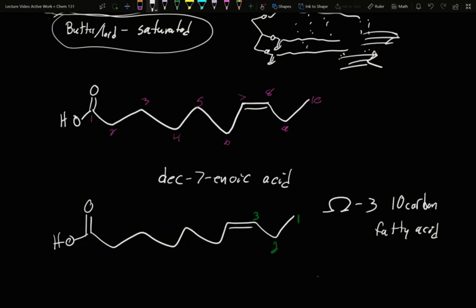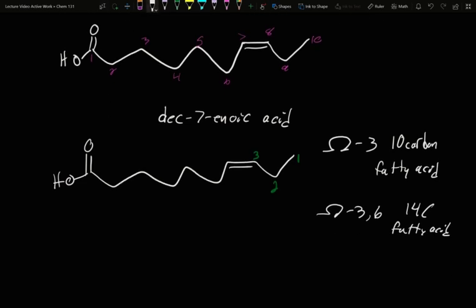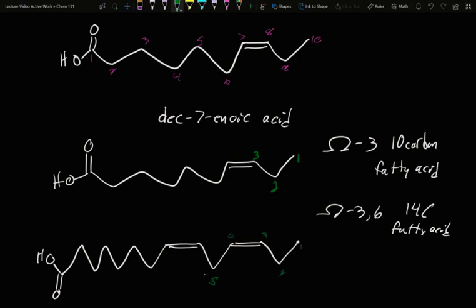If you were told you had an omega-3, 6, 14-carbon fatty acid, we could figure out what that structure was. We'd put double bonds at carbons 3 and 6 from the end, and the carboxylic acid on the 14th. This is an omega-3, 6, 14-carbon fatty acid.